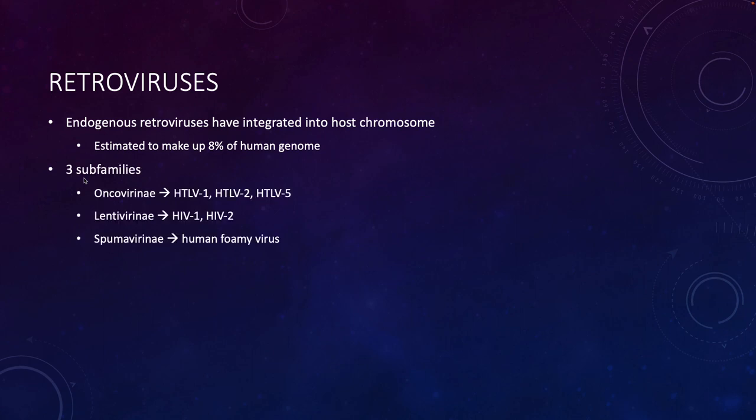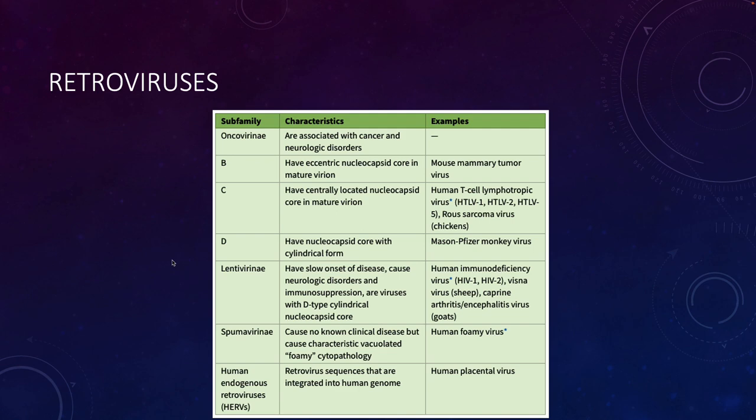In the group of retroviruses, there are three subfamilies. There are the oncovirinae—these are the ones that are more likely to cause cancer. There's the lentivirinae, that's where HIV is. These lentiviruses don't usually cause cancer. They can make you more susceptible to certain kinds of cancer, but they don't usually cause cancer. And then there's the spumavirinae, which causes a disease called human foamy virus. It doesn't really seem to have any effect on the body, but it makes macrophages look like they have big vacuoles in them.